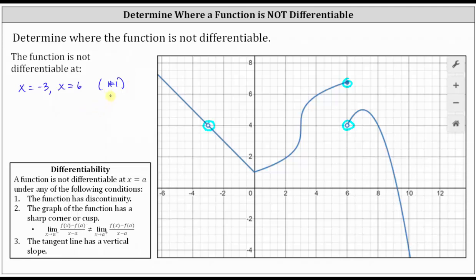And now let's move to condition number two. The graph of the function has a sharp corner or cusp. We do have a sharp corner or cusp at x equals zero here, and therefore the function is not differentiable at x equals zero. And this is because of condition number two.